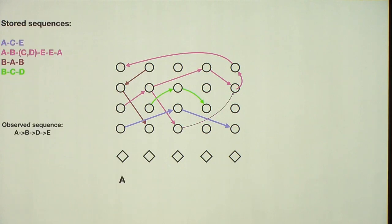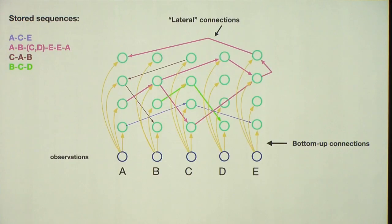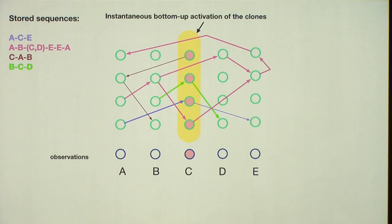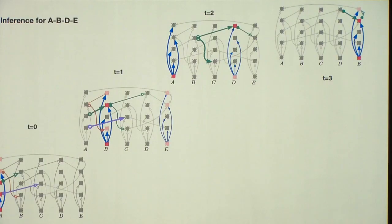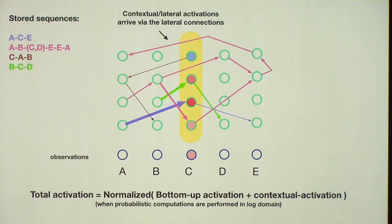Now let me show you how inference works in this graph. It's a probabilistic model. So here, suppose after having stored the sequences, you get the sequence A, B, D, E. So when A comes in, that's the first element, all these clones will be active using the bottom-up activation because directly connected to them. And then they will propagate their activations on these lateral connections. And then when B comes in, the activity of the clones will be a combination of both the bottom-up activation and the lateral activation. And this will keep going.